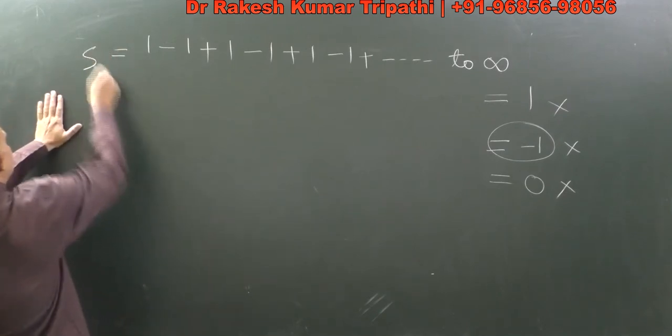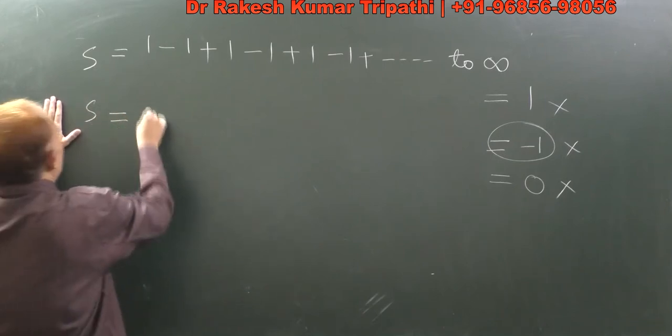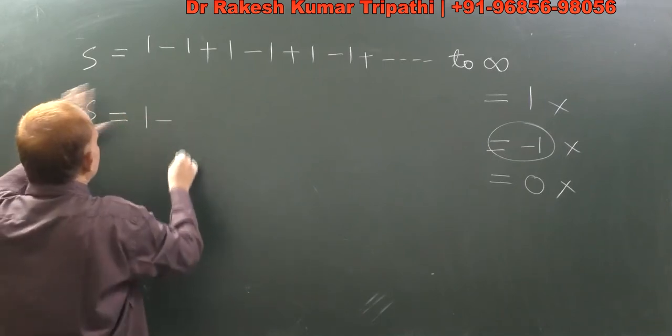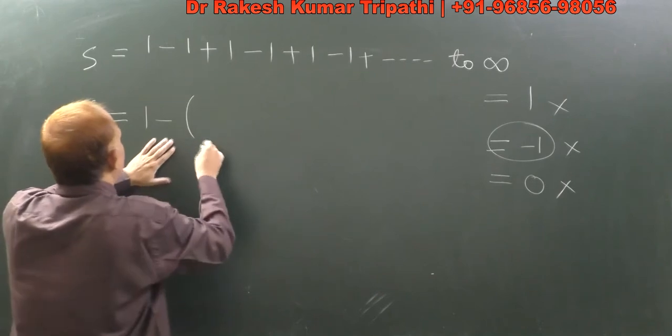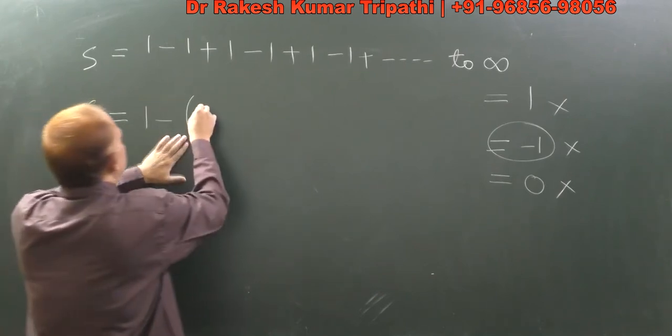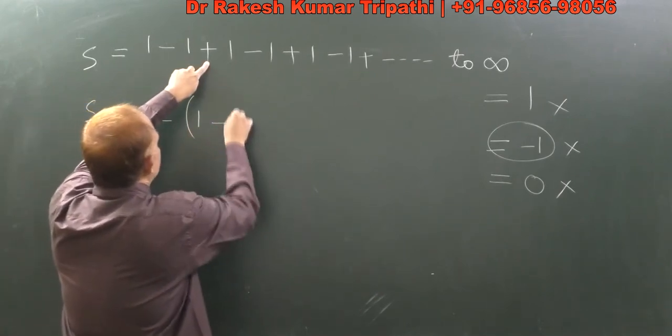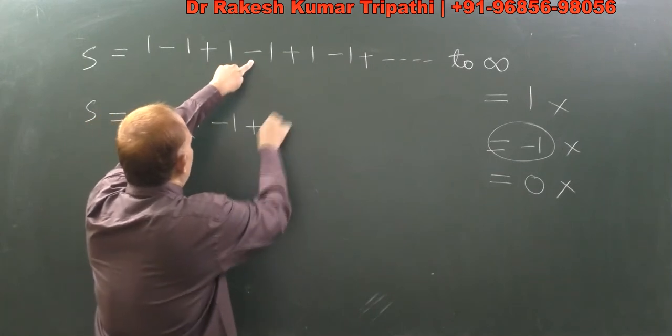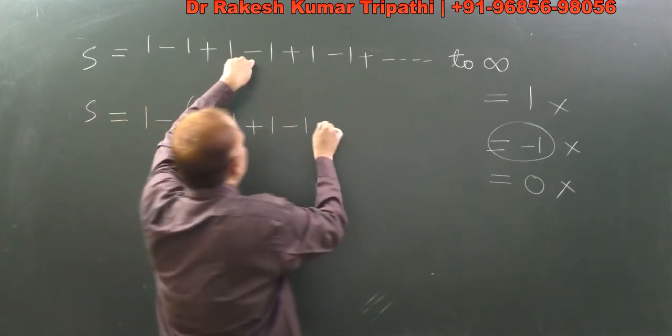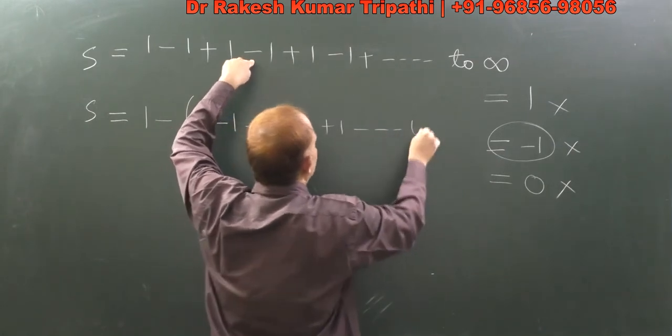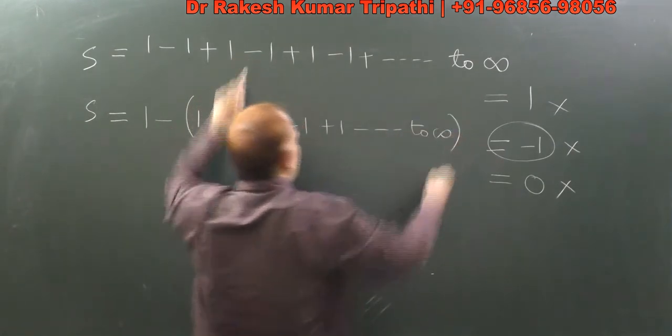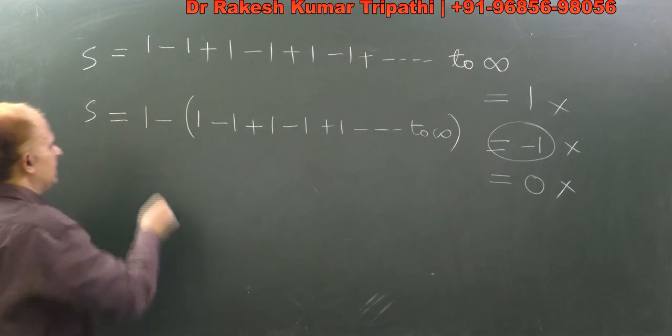this is S. S equals 1 minus, let's take minus common, so on taking minus common it becomes 1 - 1 + 1 - 1 + 1 alternately up to infinity. And as we have practiced, this is similar to S. If I cover this, you can watch and